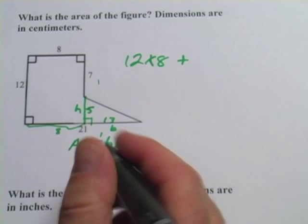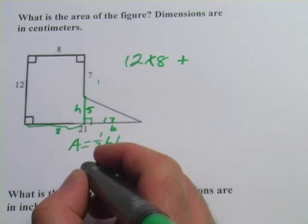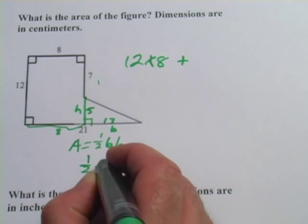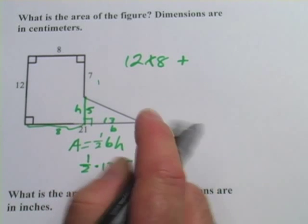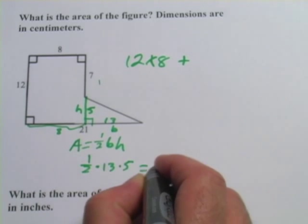Now we have all the numbers we need to figure out the area of this triangle. It equals 1 half times 13 times 5, and that is 32.5.